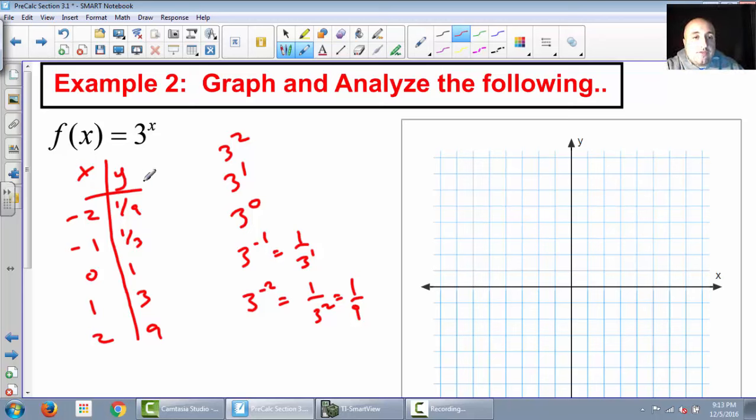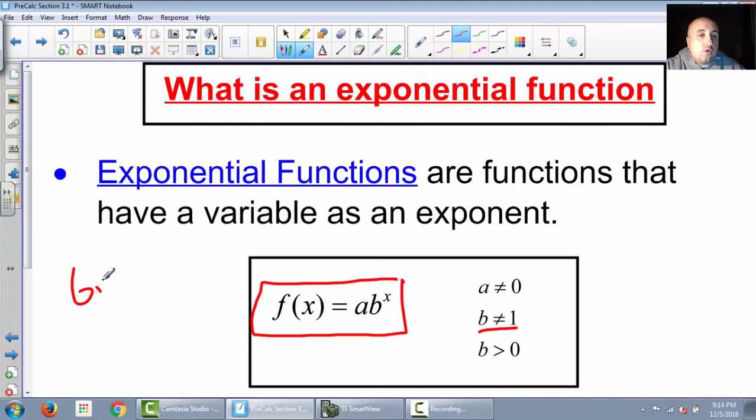Okay, so we'll graph it over here. So negative 2, 1 ninth. So 2 to the left, 1 ninth is real low. Negative 1, 1 third, a little bit higher than that one. 0 comma 1. 1 comma 3. And then 2 comma 9. And then let's think about 3. 3 to the third, that is 3 times 3 times 3, that's 27. So that's way up there. So the thing about exponentials is they grow rapidly. They grow very fast. Exponential functions grow very fast.